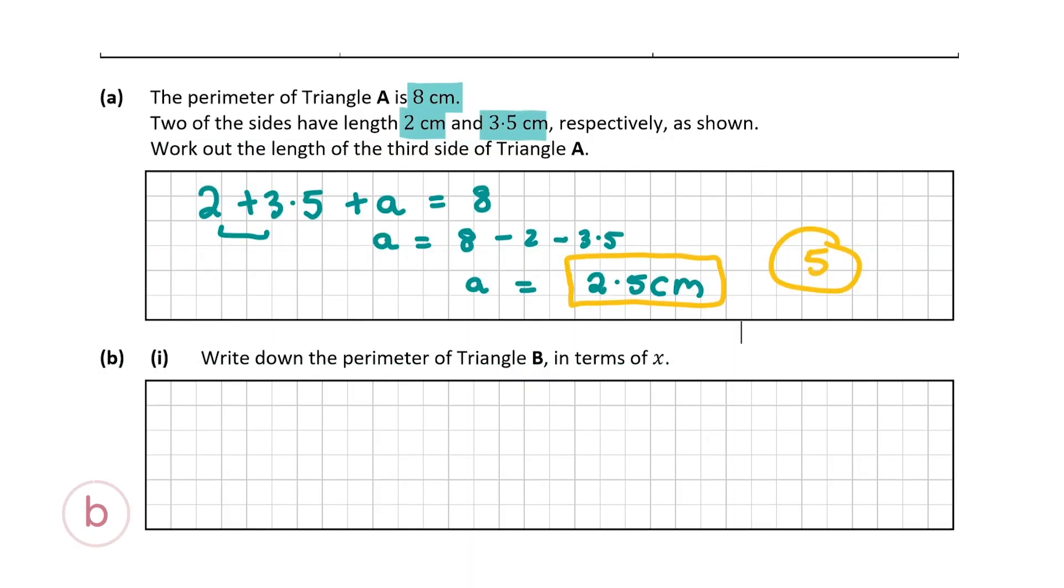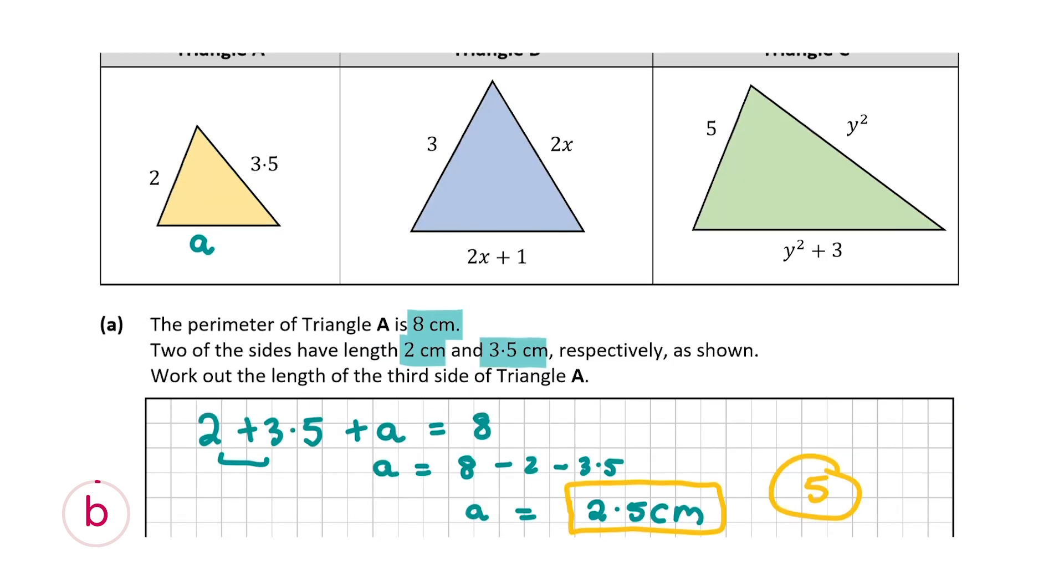Now the first part of question B asks us to write down the perimeter of triangle B in terms of X. So let's have a look at triangle B. In triangle B we have the three sides which add up to the perimeter. So let's add them all together to give us the perimeter in terms of X. So that's 3 plus 2X plus 2X plus 1. So let me write this down and simplify it.